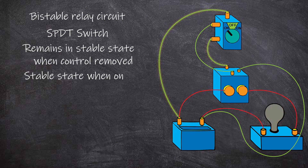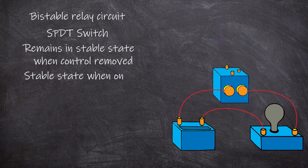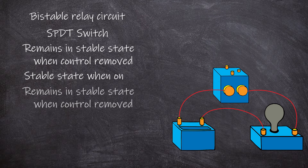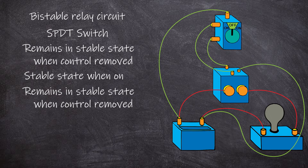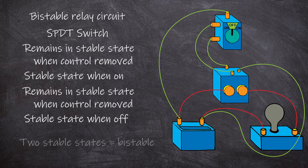When the switch is momentarily turned to the second on position, the control circuit is energized by the third switch terminal, energizing the third control terminal on the relay. Our light turns off. When the switch returns to the off position, the light remains off. Again, we remove the control elements and the light remains off. When we put the switch back, nothing changes. This means the relay is again in a stable state. This demonstrates two stable states, and thus this is a bi-stable relay.